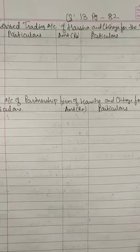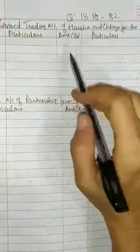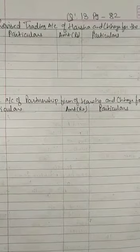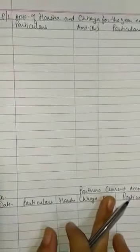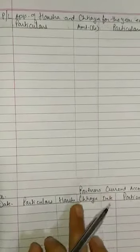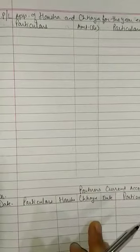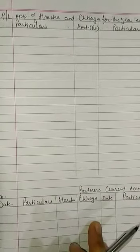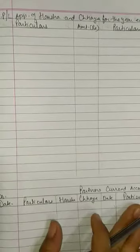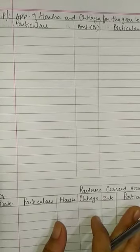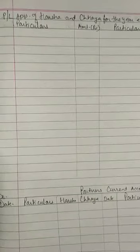The adjustment effects need to be given in the trading account, which is why a revised trading account has to be prepared. Generally when a trading account answer is given we don't prepare it again, but to give the double effect of adjustments we need it. So I have prepared: revised trading account, profit and loss account, profit and loss appropriation account. And since partner's current account is given in the question, we draw the current account. If there's no current account, we draw the capital account. The current account gets all the same effects as the capital account. Then finally the balance sheet.